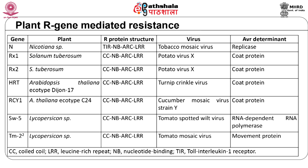The plant R genes (resistance genes) encode proteins that participate in general surveillance to identify specific pathogens. These proteins consist of a nucleotide-binding domain and leucine-rich repeat (NBS-LRR) domains, and can be further subdivided into TIR (Toll/interleukin-1 receptor) and coiled-coil types. The R protein interacts directly with an avirulence (Avr) gene product of a virus. An incompatible reaction in a specific plant R gene-virus combination results in a hypersensitive reaction, where cells around the infected cell undergo programmed cell death, isolating the viral infection. This can also trigger systemic acquired resistance (SAR), signaling a highly resistant state for further virus challenge.